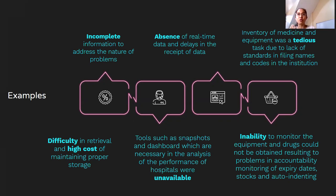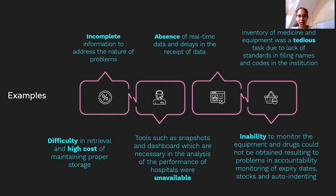Next, inventory of medicine and equipment was a tedious task due to lack of standards in filing names and codes in the institution. Imagine the number of medicines and different equipment that the hospital needs to account for. The DOH facilitates the procurement of such equipment — how can they keep track of the different PPEs and ventilators they are acquiring during COVID-19 if they won't automate the inventory of this equipment?